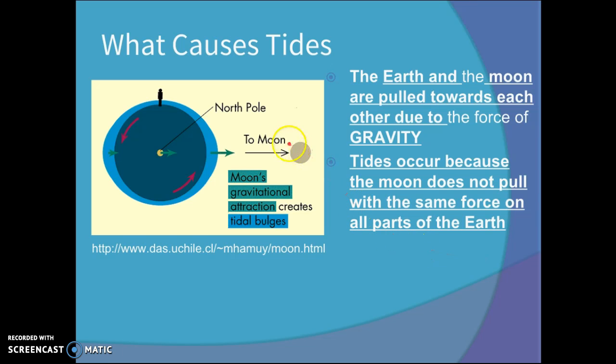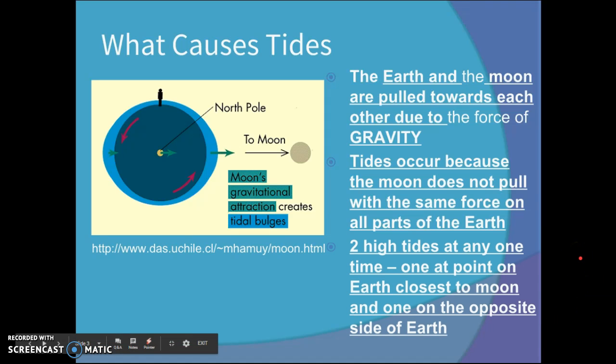Makes sense depending on where the Moon is positioned, what phase it's in, it's going to pull on different parts of the Earth at different times. There are two high tides at any one time, one at the point on Earth closest to the Moon and one on the opposite side.